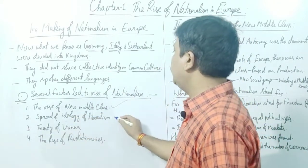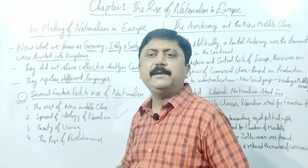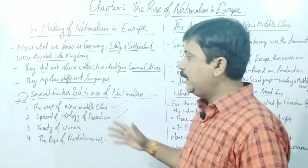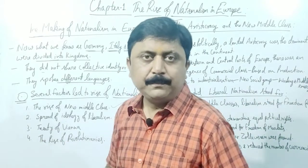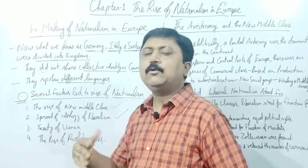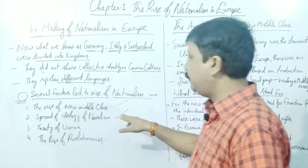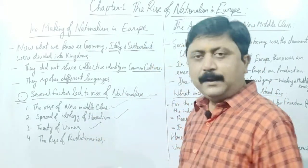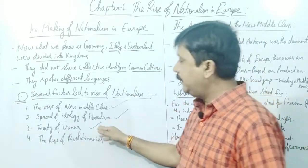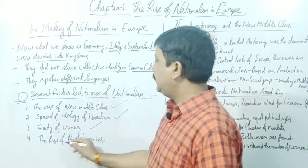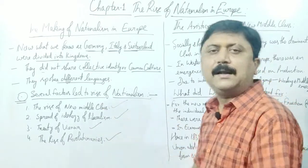The spread of the ideology of liberalism — in the first part, I have read it from the 9th — revolution, liberals, radicals, conservatives. So the liberals were the ones who believed in changes. And the rise of revolutionaries — these four categories were the ones who contributed to nationalism rising.